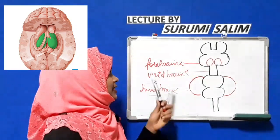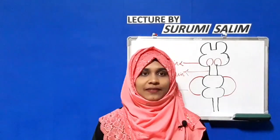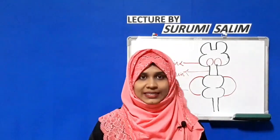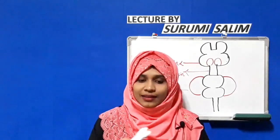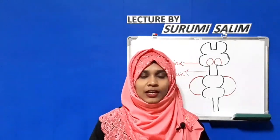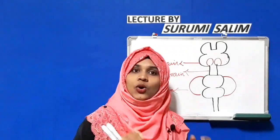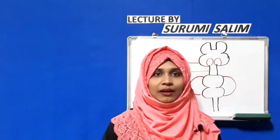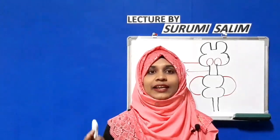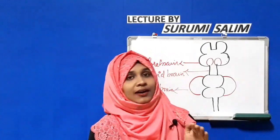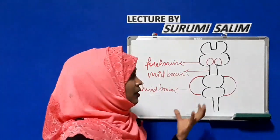First, we will see the forebrain, but before that let me briefly explain the central nervous system. The central nervous system is the master system of the body, which coordinates all the activities of other systems and body parts. It has a contralateral coordination — the right side of the body is controlled by the left hemisphere and the left side is controlled by the right hemisphere.